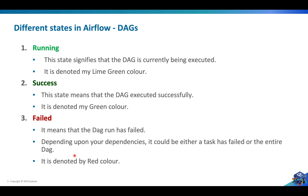First I would like to talk about different states of DAGs. As we have discussed about DAGs and task instances in the previous video, in this video I want to give more emphasis on the different states and how the states change throughout the course. The first state I want to talk about is running — this state signifies that the DAG is currently being executed, and it is denoted by this lime green color.